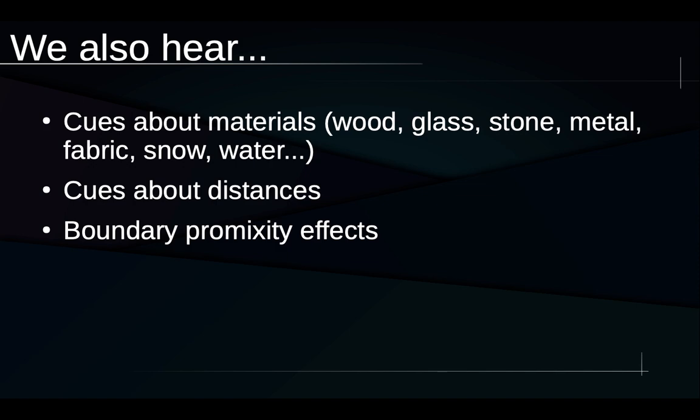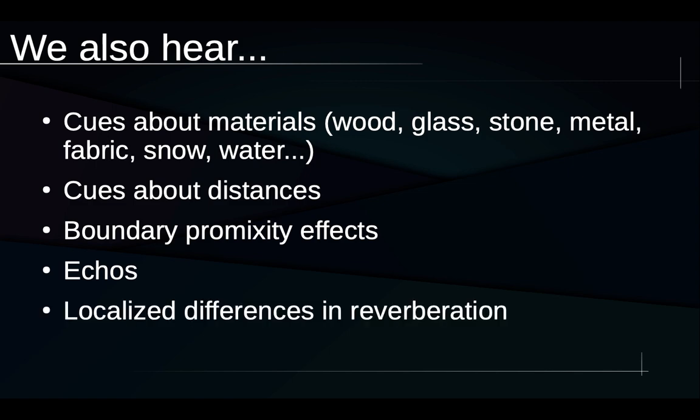We definitely hear cues about the distances between objects in scenes and between objects and surfaces in scenes. We hear boundary proximity effects. For example, if we walk at a wall with our eyes closed but our ears open, we may be able to find that just by our sense of hearing alone, we're able to stop without hitting the wall because we hear how the acoustics change when we're in really close proximity to that boundary. There are things like echoes that are often given great cultural significance. And we also hear localized differences in reverberation.